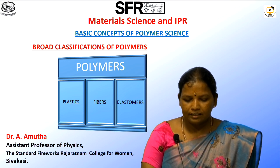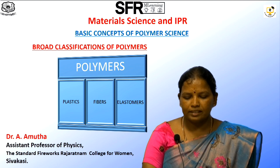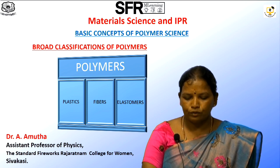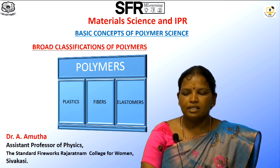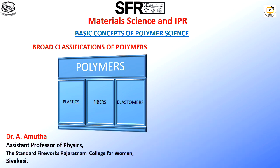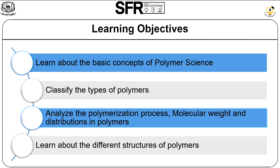Here is an overview of what we will cover: we have to learn about the basic concepts of polymer science, classify the types of polymers, analyze the polymerization process and molecular weight and molecular weight distribution of polymers, and learn about the structure of polymers. There are three different types of polymerization processes that we will also discuss in this video.